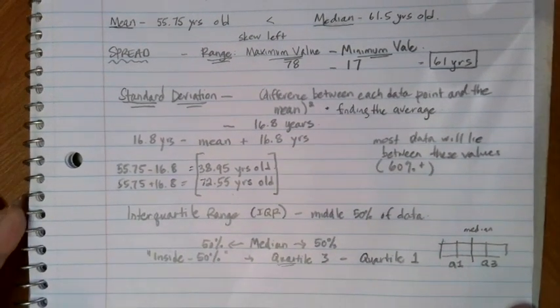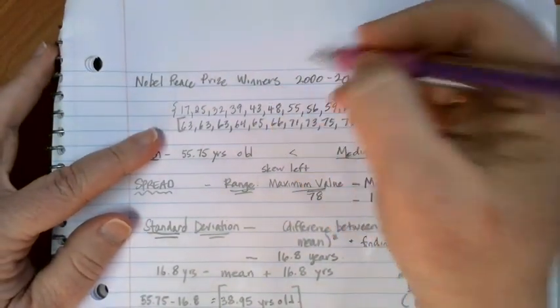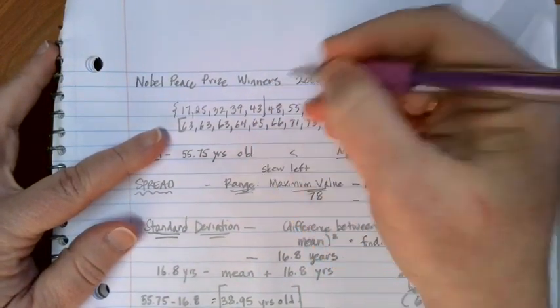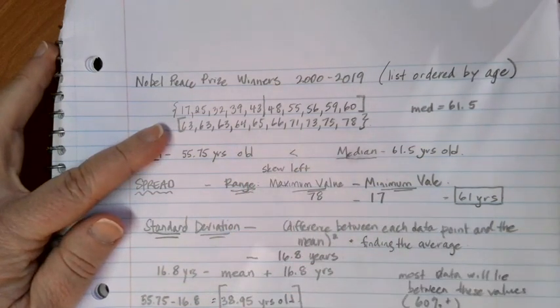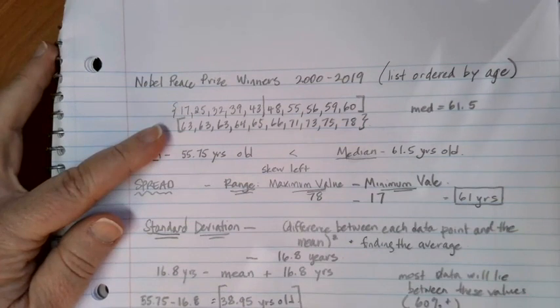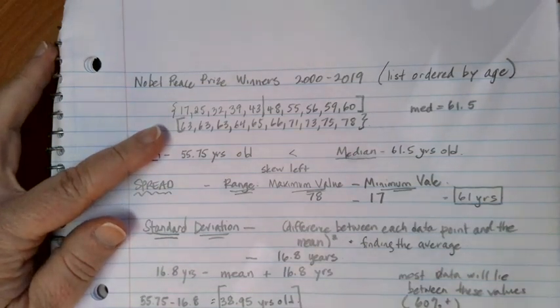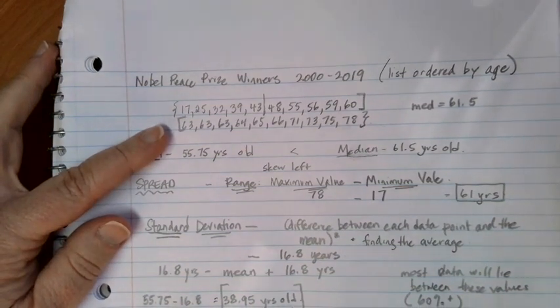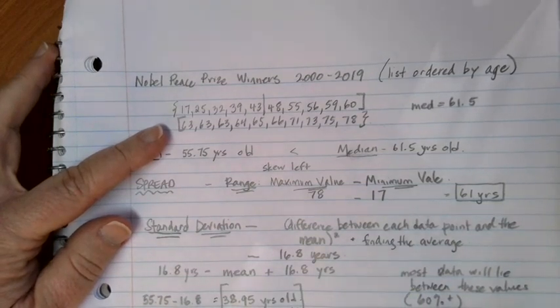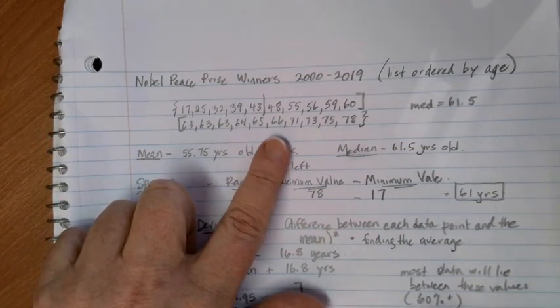Again, calculators and technology is going to allow us to find these values very, very quickly. We'll talk about that in a later video. If we come back up here to our sets, notice that if we divide this lower half of our data in half, we get at halfway in between 43 and 48 is going to be 45.5. So in this case, our lower data, our quartile one here is going to be at 45.5. And our upper quartile is going to lie in here, halfway between 65 and 66 is 66.5.